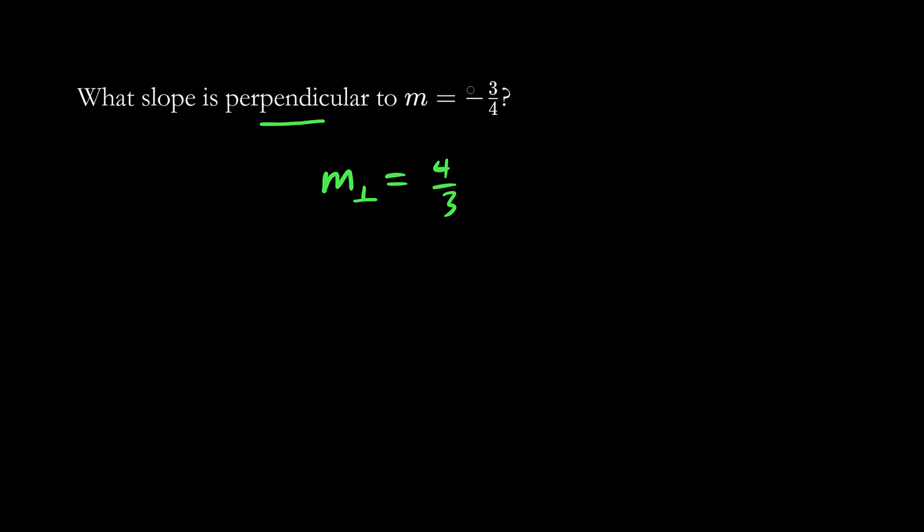On the other hand, if we had a positive number, it would become negative. So we perform two operations: we flip the numerator and denominator and change the sign. So this is our new perpendicular slope.